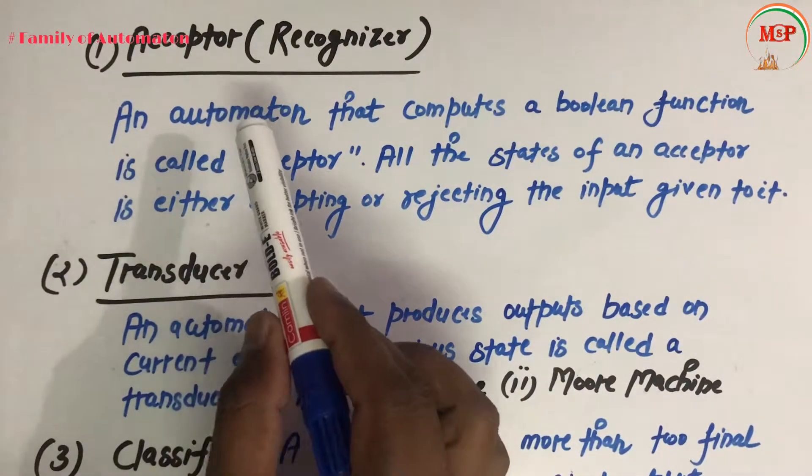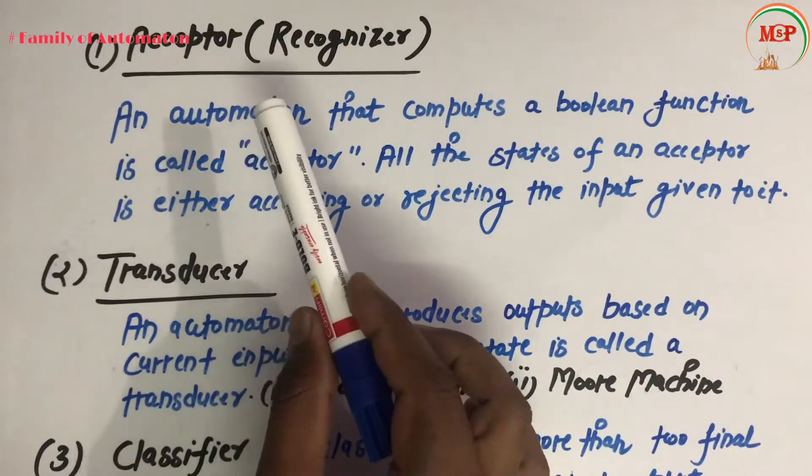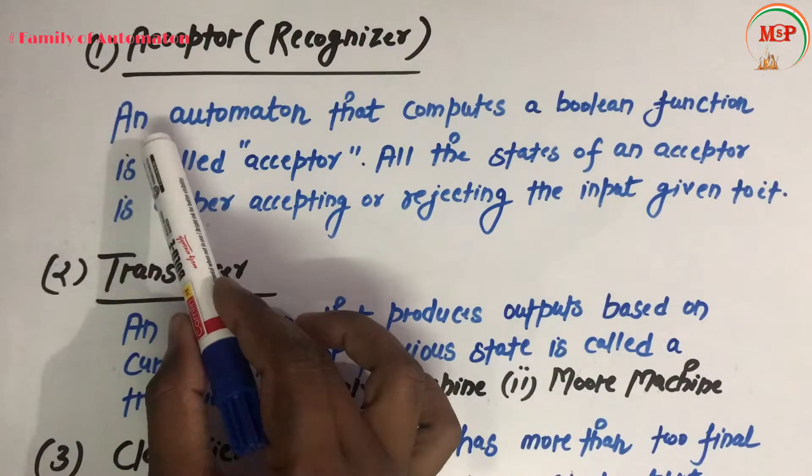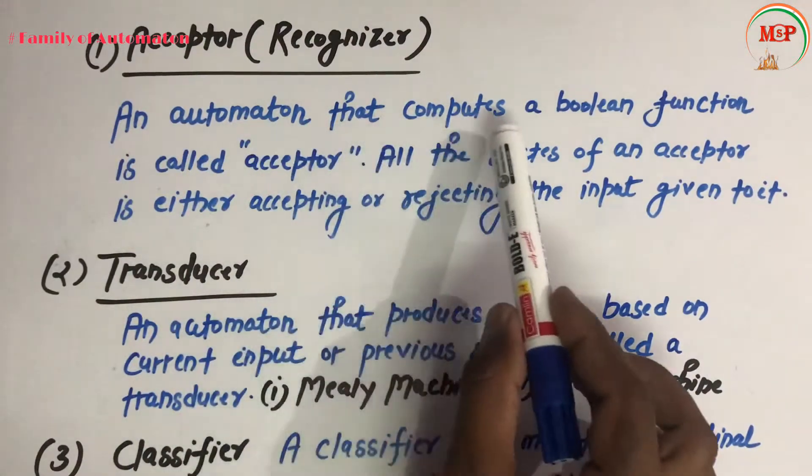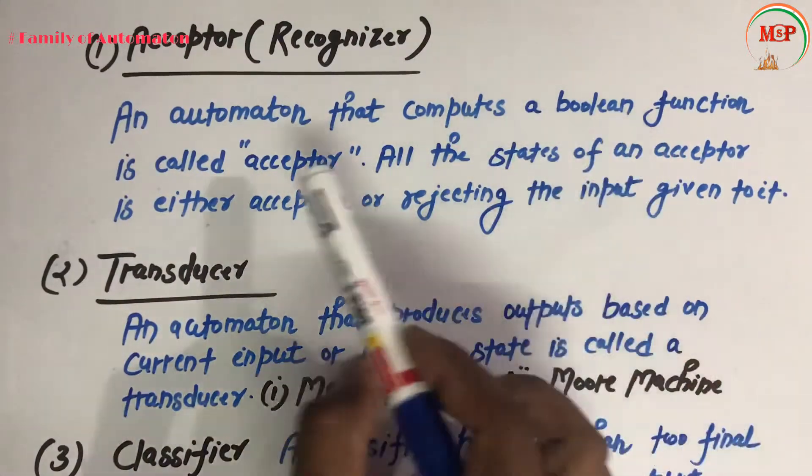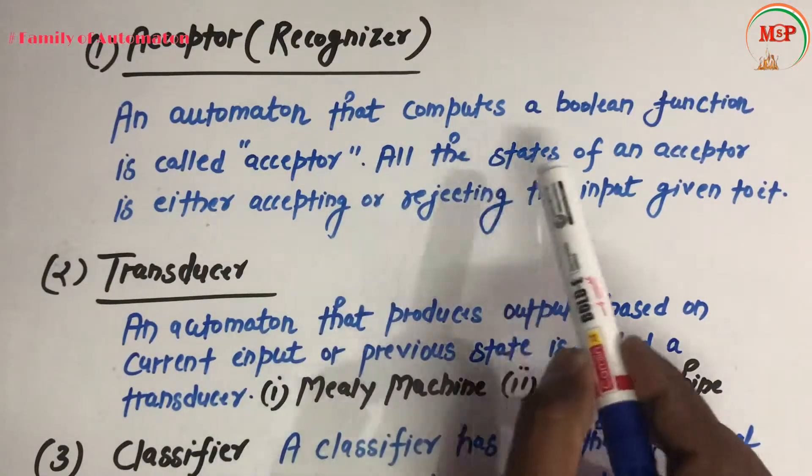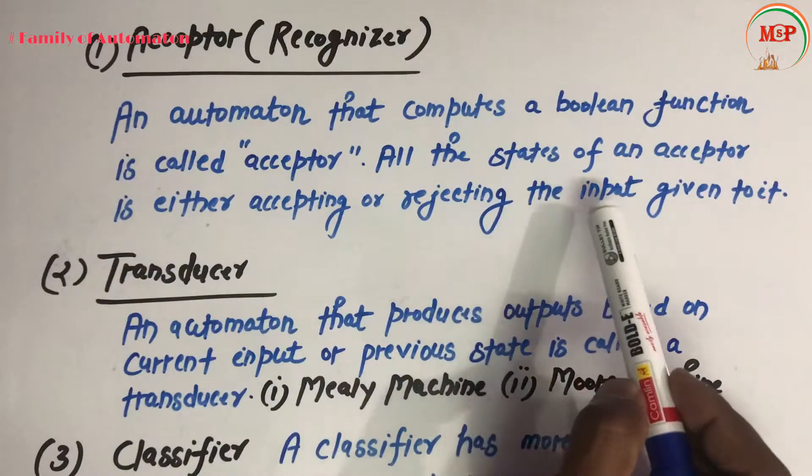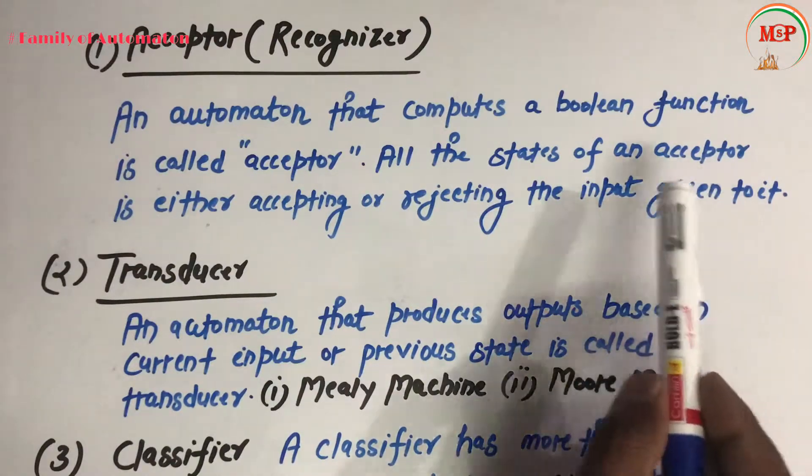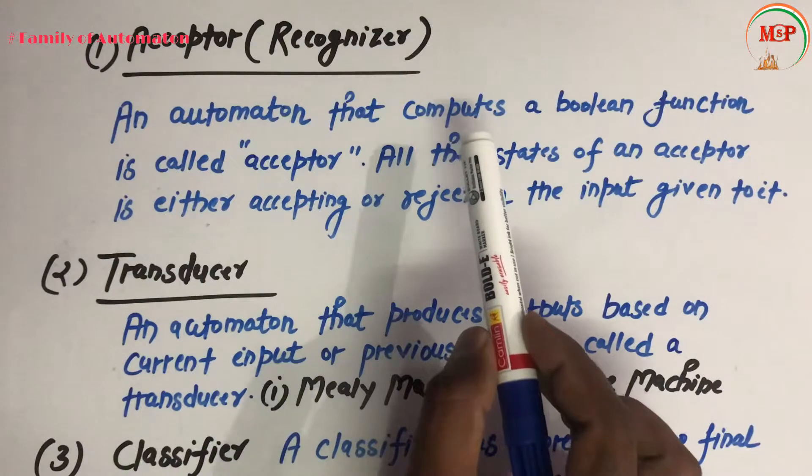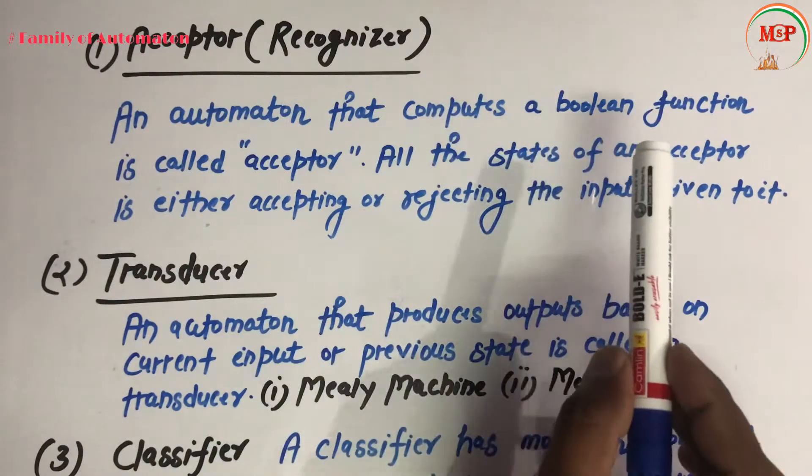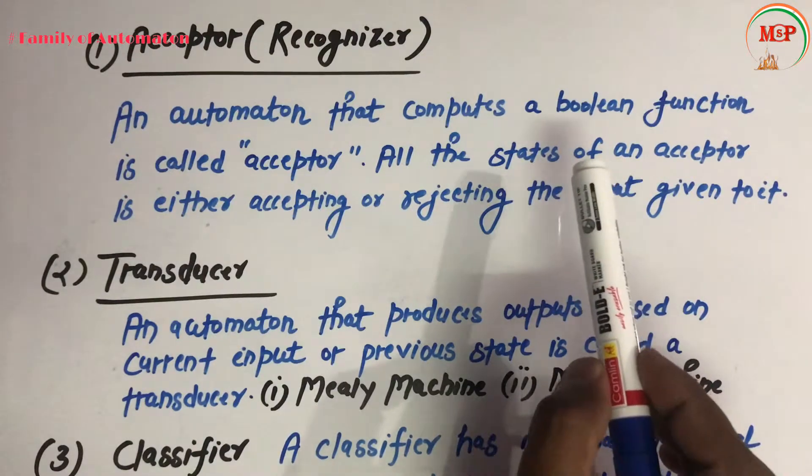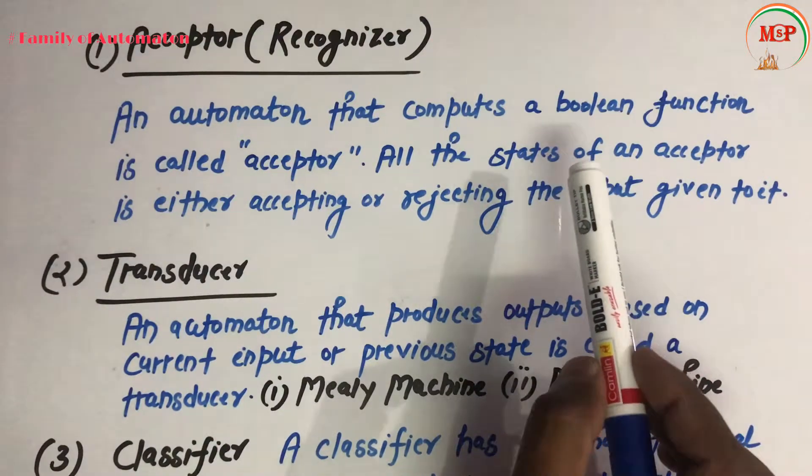Now let's see the definition of acceptor, which is also called recognizer. An automaton that computes a boolean function is called acceptor. All the states of an acceptor are either accepting or rejecting the input given to it.